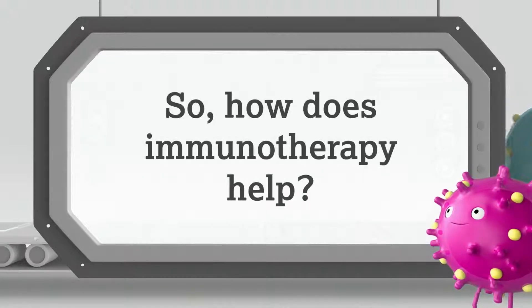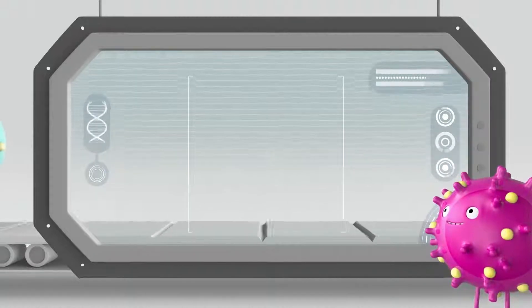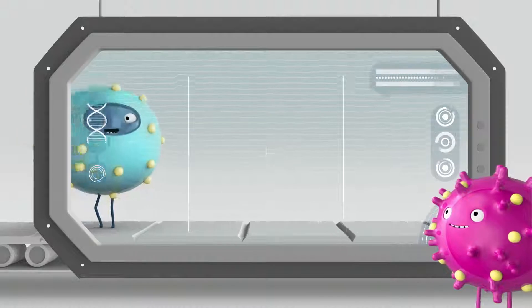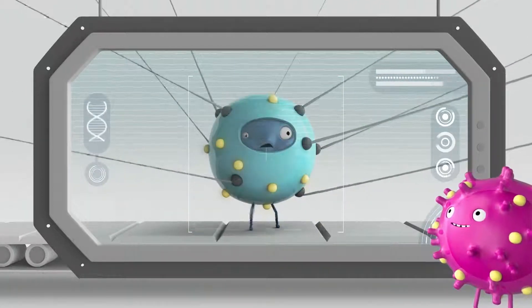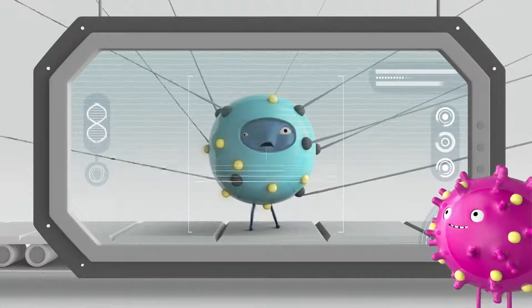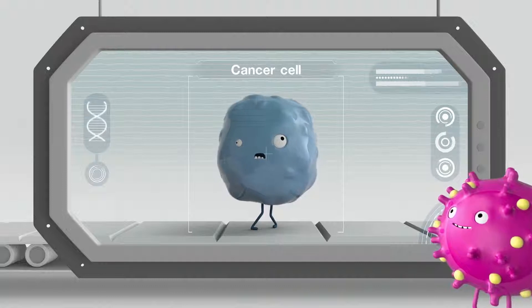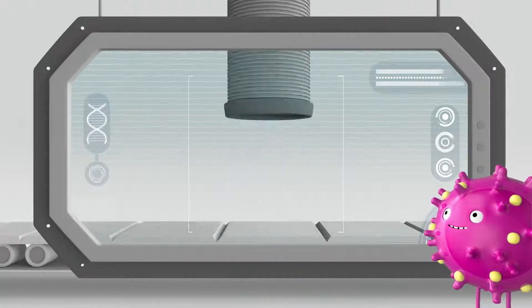So, how does immunotherapy help? There are several types of immunotherapy, and each works a bit differently. One common type works by blocking these checkpoints that allow cancer cells to hide from your immune system. This allows your immune system to work once again without being held back by the checkpoints so that it can detect and destroy these cancer cells.